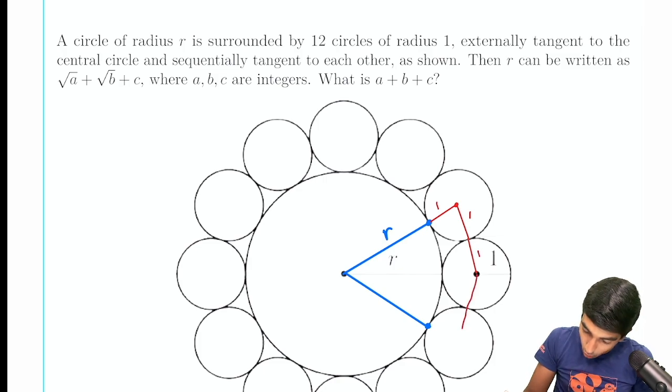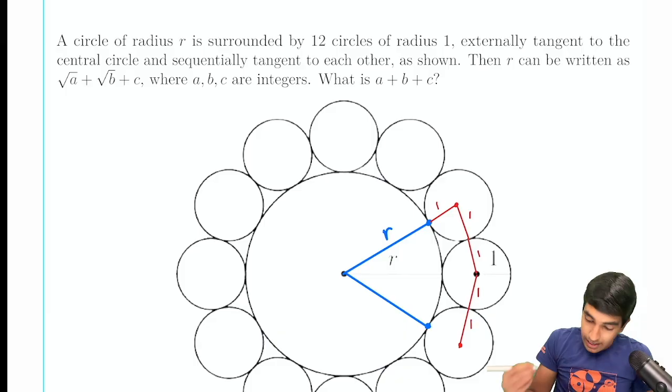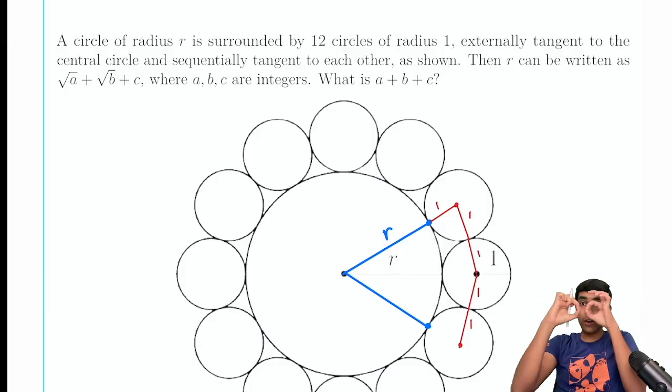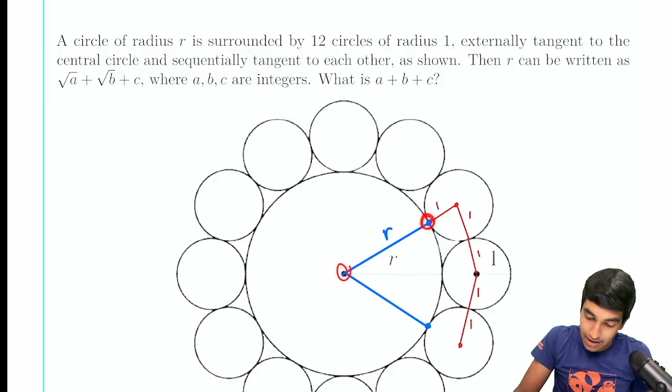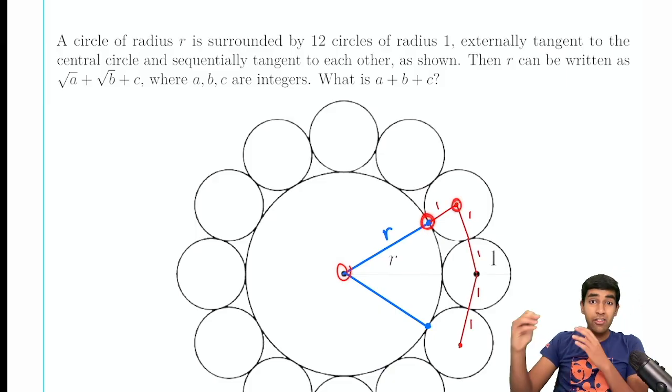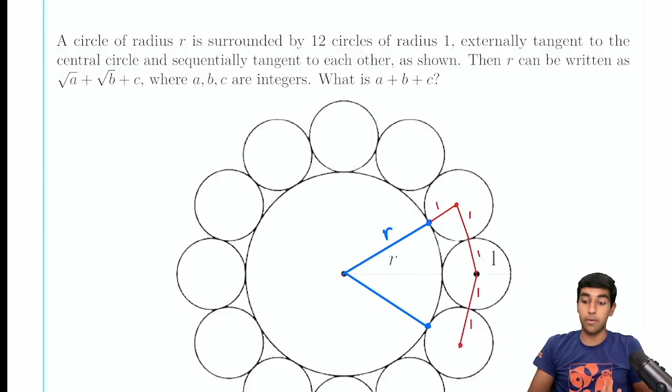And a really neat property that's always good to keep in mind for these problems is that whenever you have these two externally tangent circles, the center, the tangency point, and these three points are always going to be in a line. They're going to be collinear.